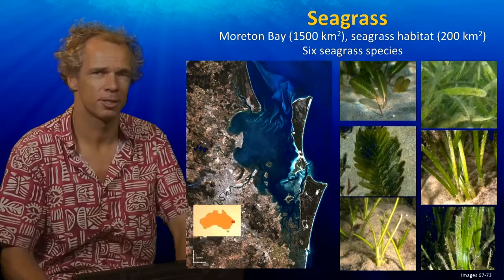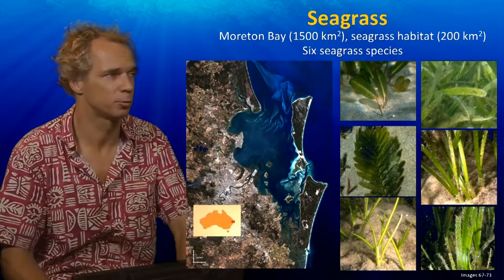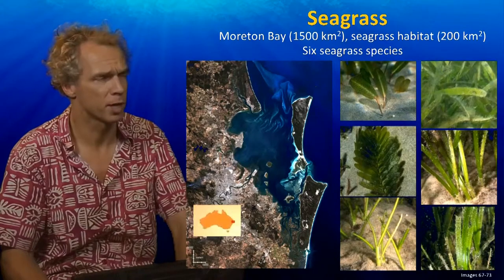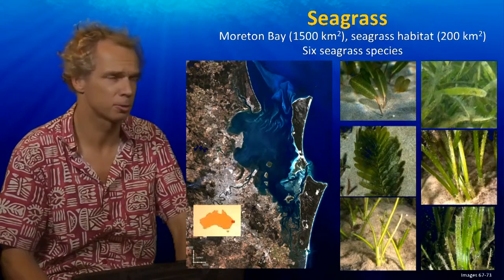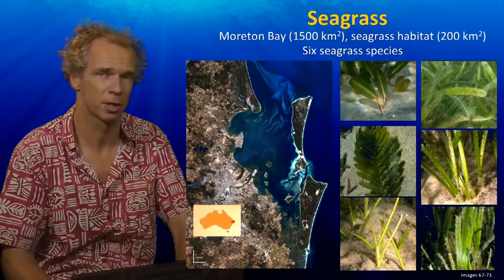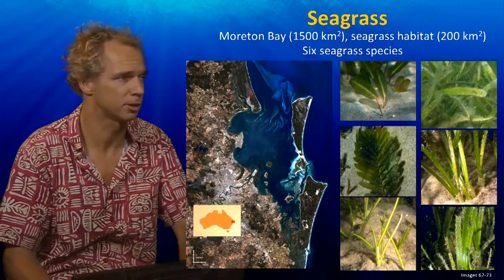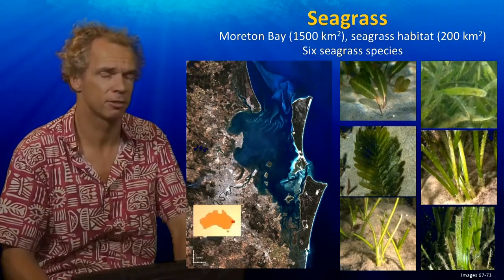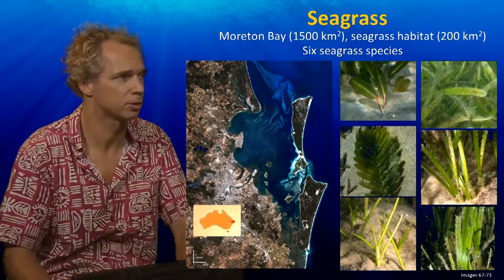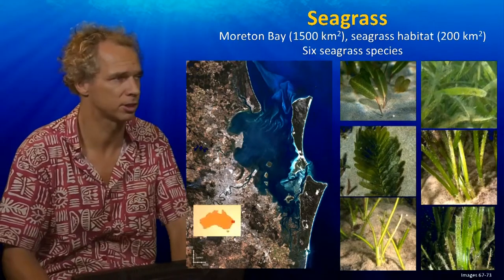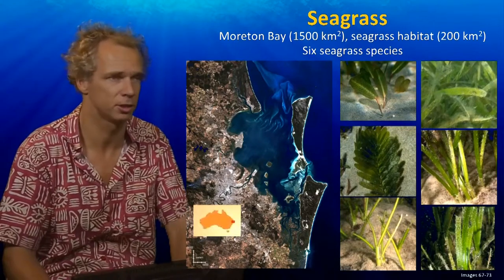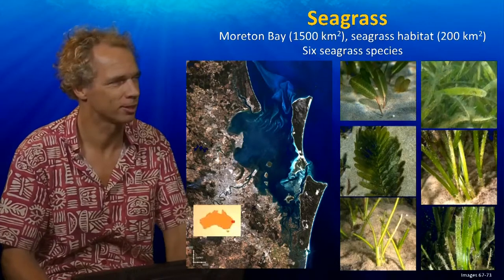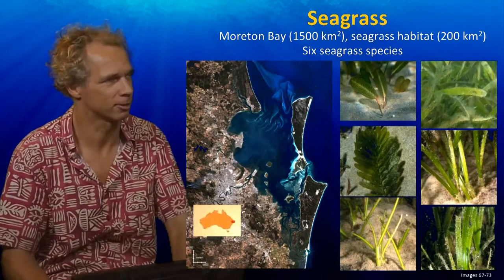Not only in this area but throughout Morton Bay you can find seagrass. Morton Bay is about 1500 square kilometers and 200 square kilometers of it contains seagrass habitat. These seagrasses vary in size and form and there are six main species — you have oval looking ones and strap-like looking ones.